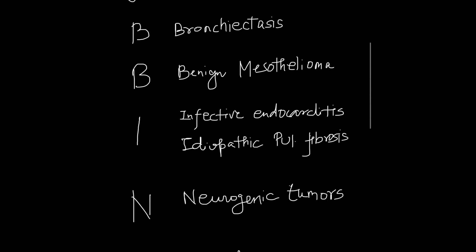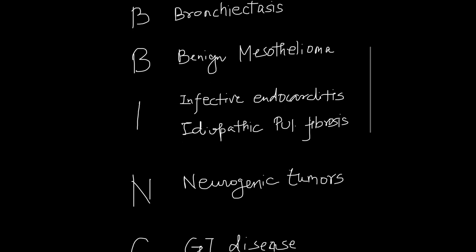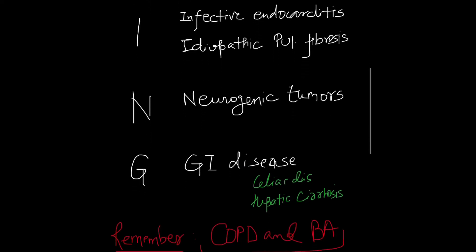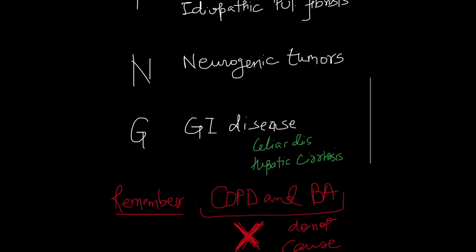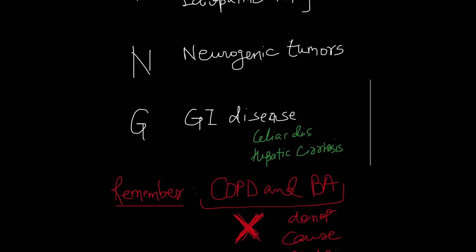The second B is for benign mesothelioma. I is for infective endocarditis and idiopathic pulmonary fibrosis. N is for neurogenic tumors. G is for GI diseases — gastrointestinal diseases like celiac disease and hepatic cirrhosis.